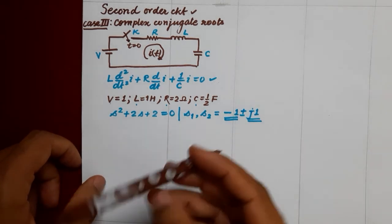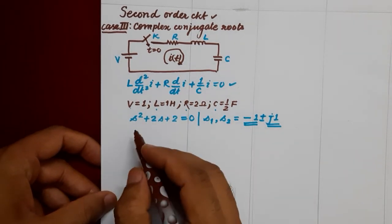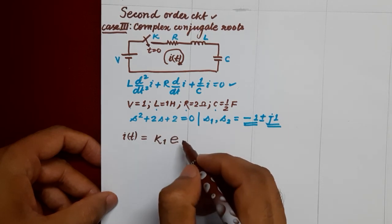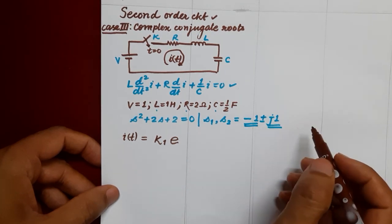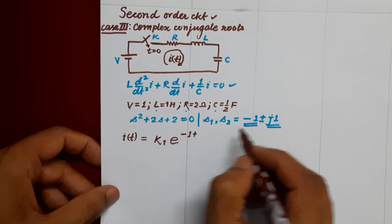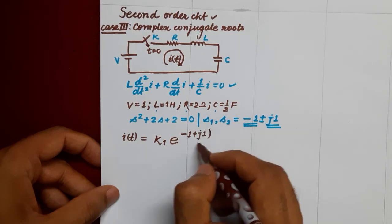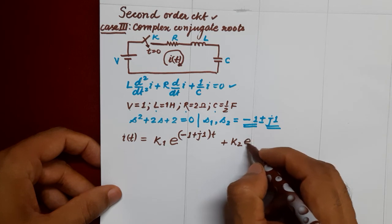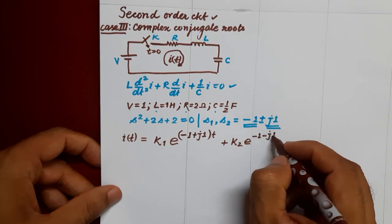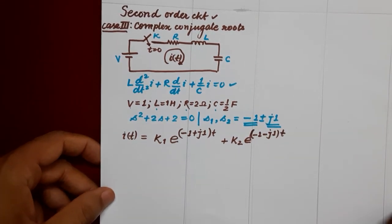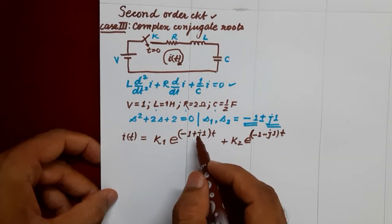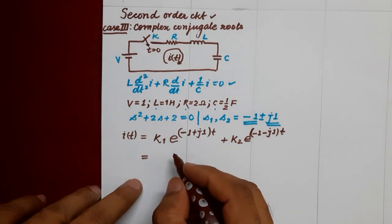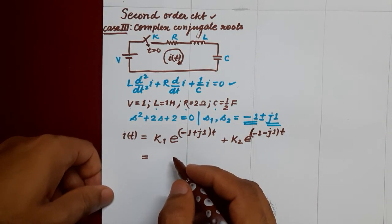Now if we want to write its solution, then i(t) is equal to k1 times e to the power of the first root in the exponent — so e to the power (minus 1 plus j1)t — and then the second expression k2 times e to the power (minus 1 minus j1)t. These exponentials having imaginary exponents can be represented in terms of cosine and sine.